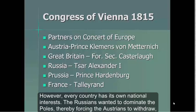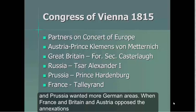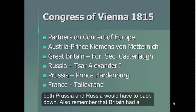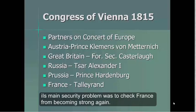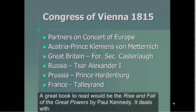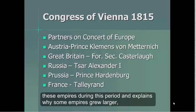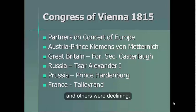Every country has its own national interest. The Russians wanted to dominate the Poles, thereby forcing the Austrians to withdraw, and Prussia wanted more German areas. When France, Britain, and Austria opposed the annexations, both Prussia and Russia would have to back down. Also remember that Britain had a constitutional monarchy — it could not have cared if liberal revolution occurred inside Europe. Its main security problem was to check France from becoming strong again. A great book to read would be The Rise and Fall of the Great Powers by Paul Kennedy, which deals with these empires during this period and explains why some empires grew larger and others were declining.